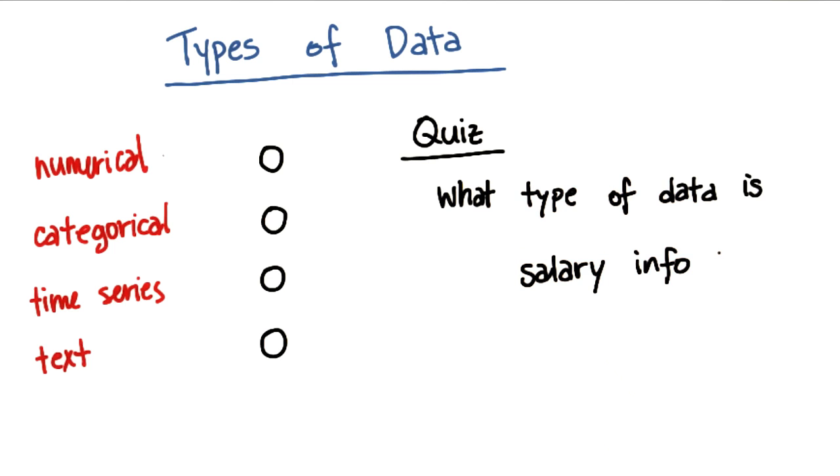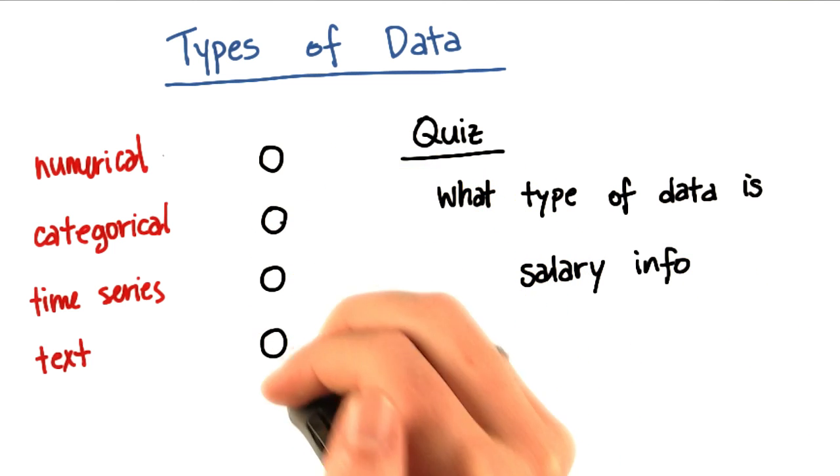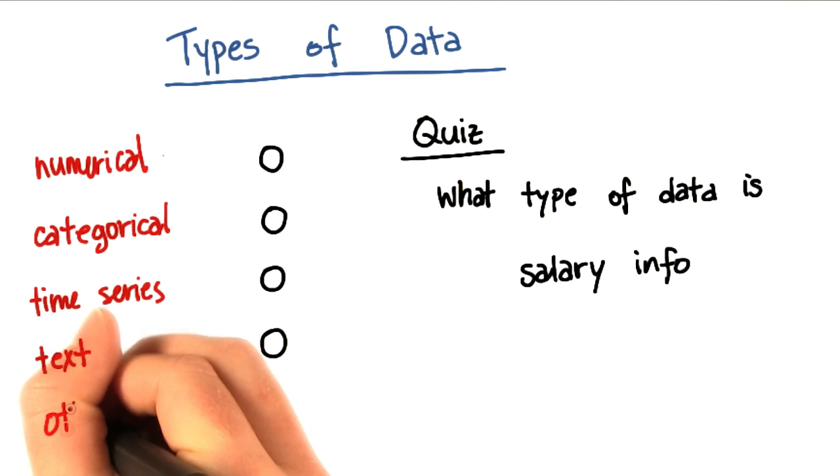I'm going to give you a bunch of types of features you might see and ask you what type of data that feature is. First example is salary information. Would you call this numerical, categorical, time series, text? Or let's put other on the list as well, because this isn't a complete list.